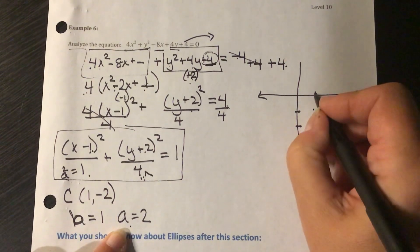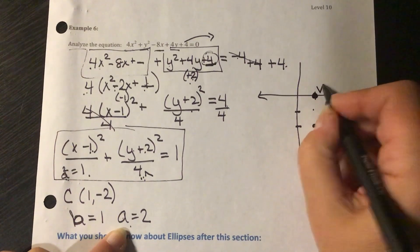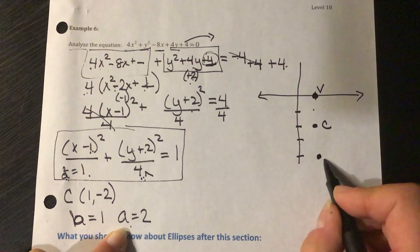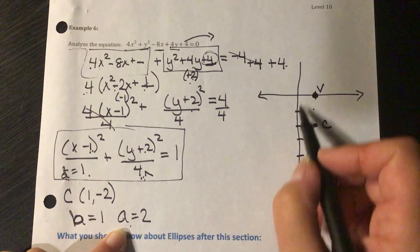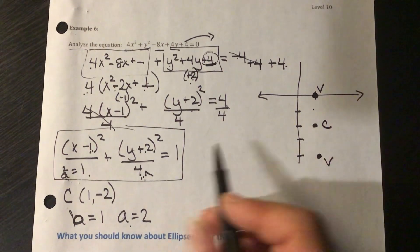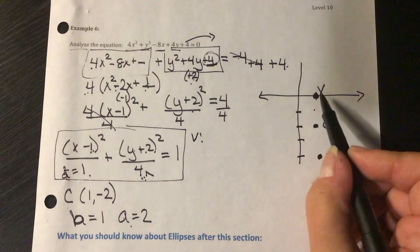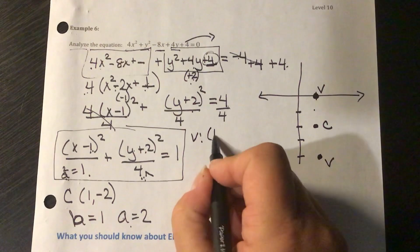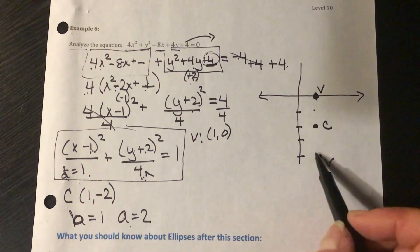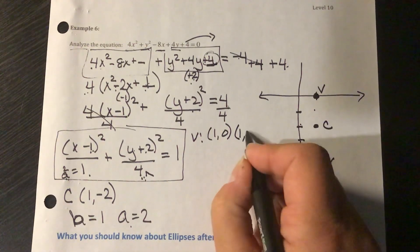Going up 2 from center (1, -2) gives vertex (1, 0), and going down 2 gives vertex (1, -4). So the vertices on the major axis are at (1, 0) and (1, -4).